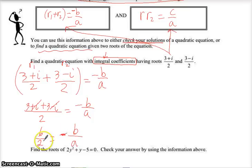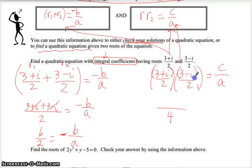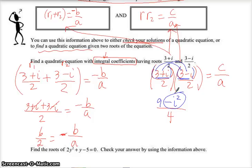We need to figure out whether the a should remain 2 and b remain 6, or cancel to 3 over 1. Now for the multiplication: (3 plus i)/2 times (3 minus i)/2, which should equal c over a. The denominators give us 4. The numerators are a difference of squares: 3 times 3 is 9, and positive i times negative i is negative i squared. Since i squared equals negative 1, a double negative turns into a positive. So 9 plus 1 equals 10, giving us 10 fourths.